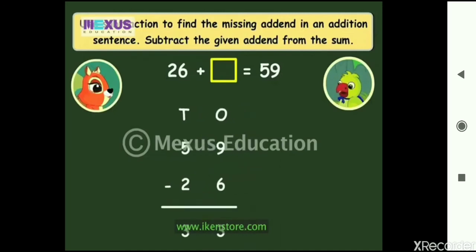To check if this answer is correct, let us add 26 and 33 and see if the sum is 59. Adding the ones gives 9. Adding the tens gives 5. You see, the sum is 59. So our answer that the missing addend is 33 is correct.